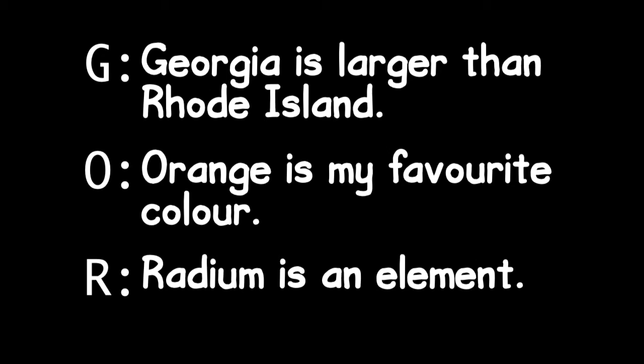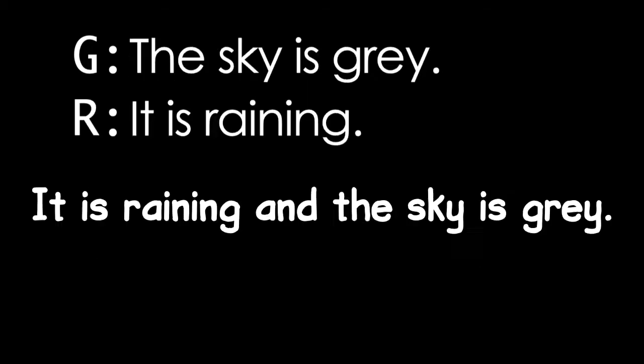When we're translating, we have to make a decision on a specific symbolization key. G can mean the sky is gray, or Georgia is larger than Rhode Island, or anything else we decide we want to make it mean. It can't mean both things at once, but for different problem sets, we can use a different symbolization key. In general, we'll define the symbolization key to capture all of the basic sentences we want to translate. So take that symbolization key about the weather again.